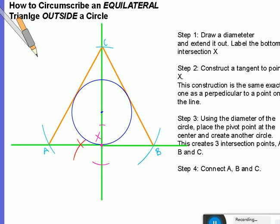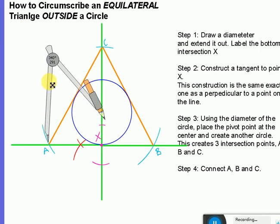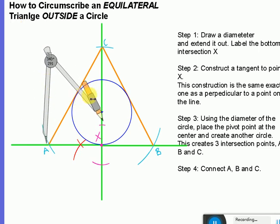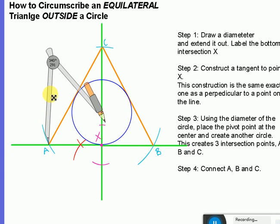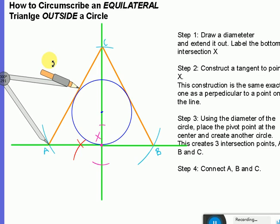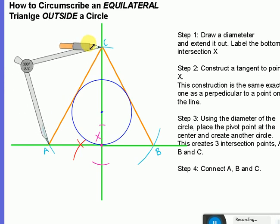So there's your equilateral triangle around the circle. Now let's just make sure it is equilateral. How will I know? Well, I can use my compass to measure the length of each of the sides. And let's go ahead and do that. So this is the length from A to C.